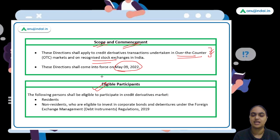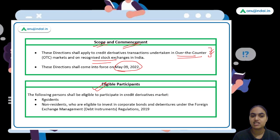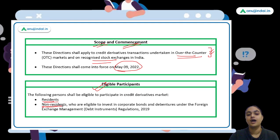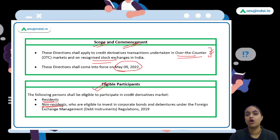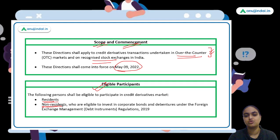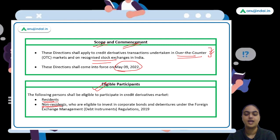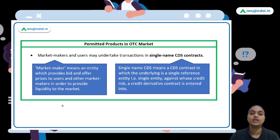Talking about eligible participants — who can participate in the credit derivative markets? All residents can participate. For non-residents, those who are granted eligibility under Foreign Exchange Management regulations to invest in corporate bonds and debentures can also deal in credit derivative transactions.